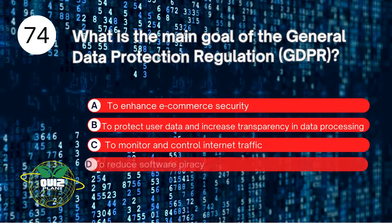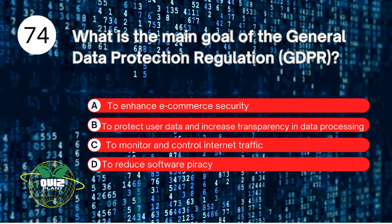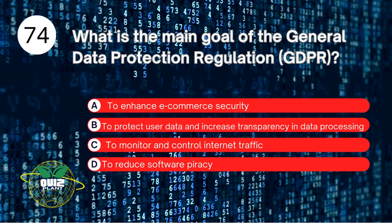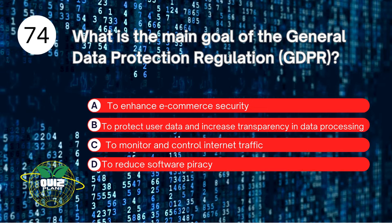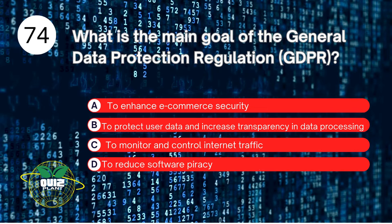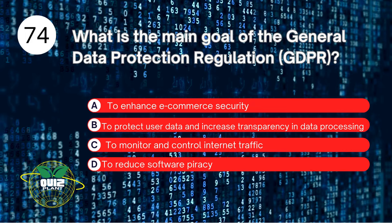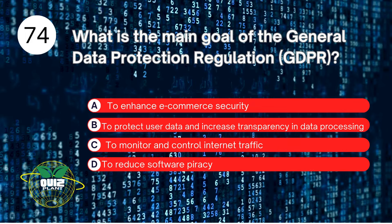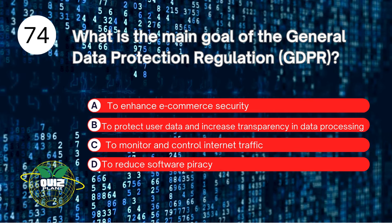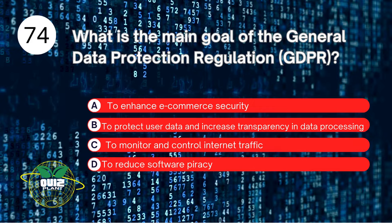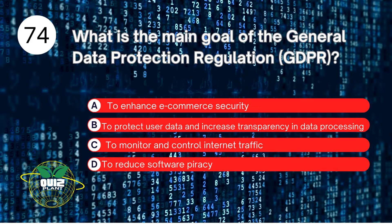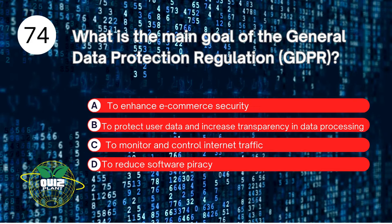Number 74. What is the main goal of the General Data Protection Regulation, GDPR? A. To enhance e-commerce security. B. To protect user data and increase transparency in data processing. C. To monitor and control internet traffic. D. To reduce software piracy. The answer is B. To protect user data and increase transparency in data processing.